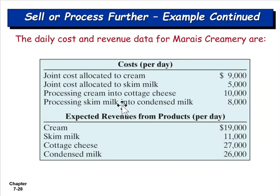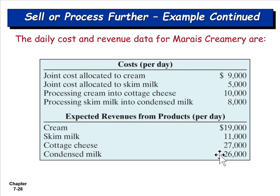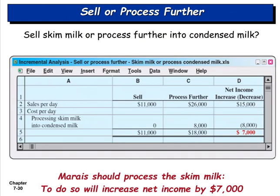For skim milk into condensed milk: skim milk sells for $11,000, condensed milk for $26,000 — a difference of $15,000. The cost to process is $8,000, so we make $15,000 in additional revenue at a cost of $8,000 in additional expenses — a $7,000 increase in net income. Absolutely, we would process skim milk into condensed milk.